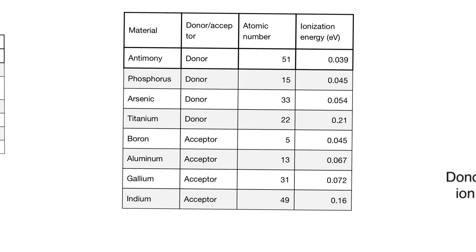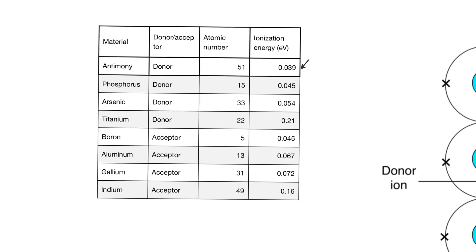We divide dopants or impurities into two types: donors and acceptors. There's a quantity called ionization energy, which is measured in electron volts. If you look at the values of the ionization energy in the table, they are obviously small. We still have to understand what ionization energy means.